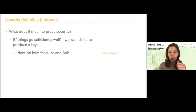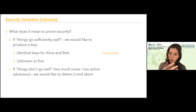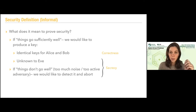So Alice and Bob should hold the exact same key. We want the key to be unknown to Eve, so it should be a secret key. In addition, if things don't go well — if we detect too many errors, if the adversary is too active — then we would like to detect it and abort the protocol. The combination of the key being unknown to Eve if we produce the key, and otherwise aborting, is what we call secrecy.